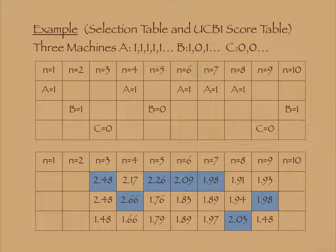Here is one example. We have three machines A, B, and C. We have 10 coins. Each time, we compute UCB1 scores and select the machine with maximum UCB1 score.